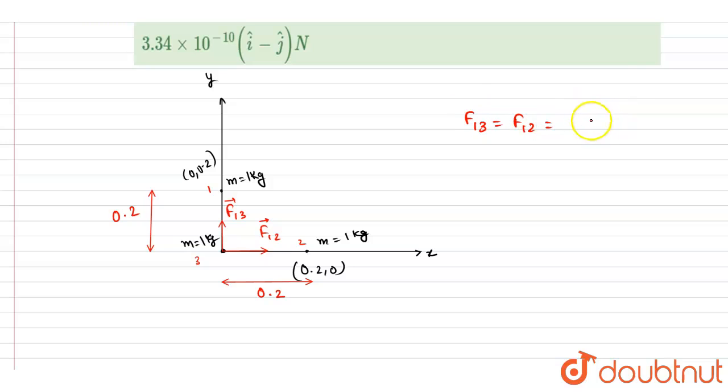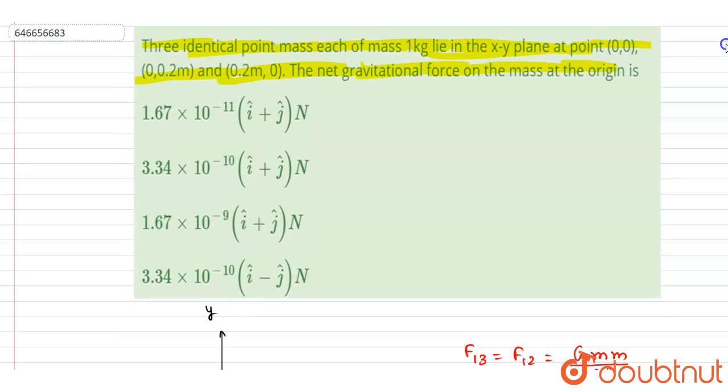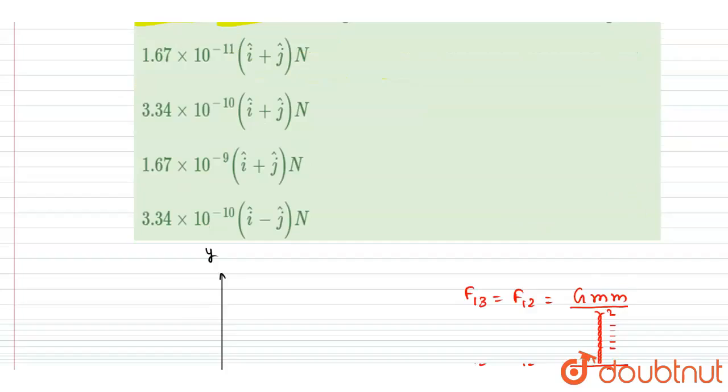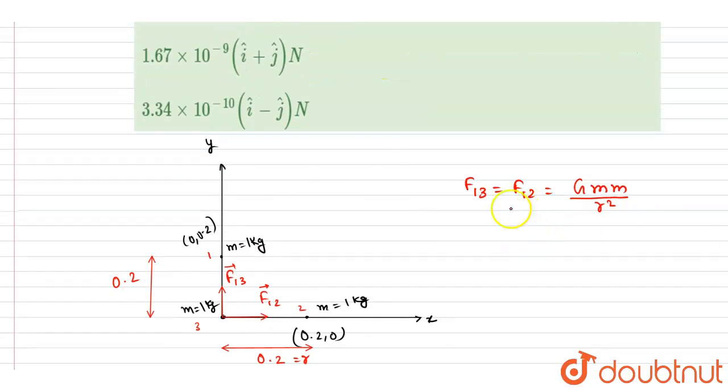It will be equal to G×m₁m₂/r². So r is the same. The mass is 1 kg, and G is 20/3 × 10⁻¹¹. So we will just put the values here.